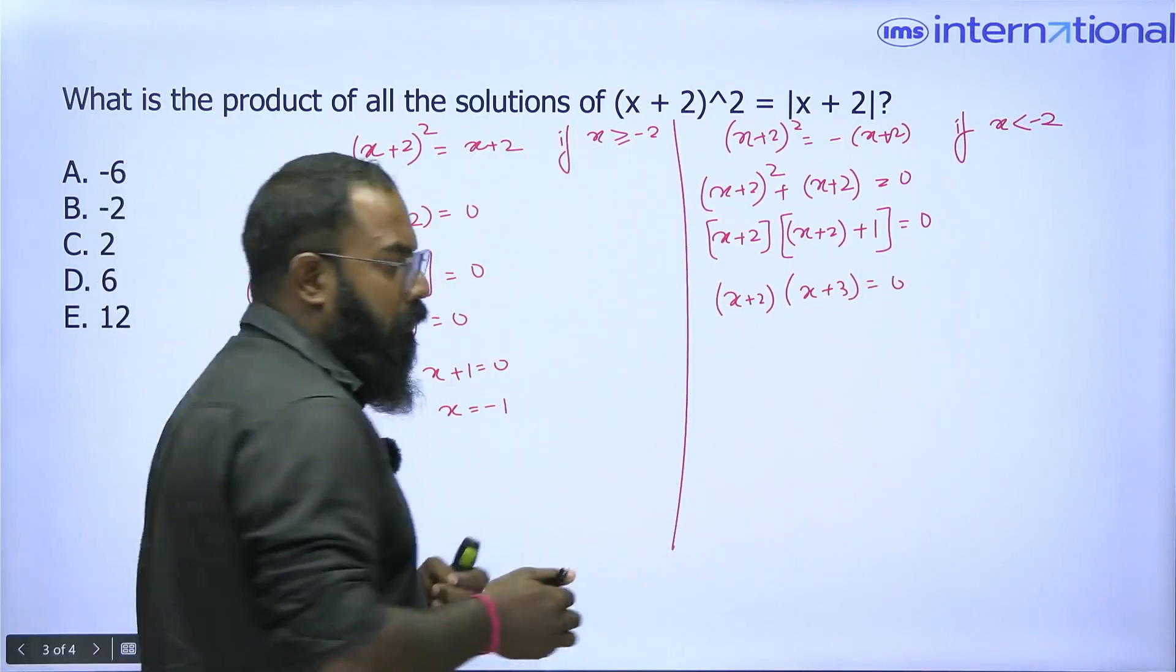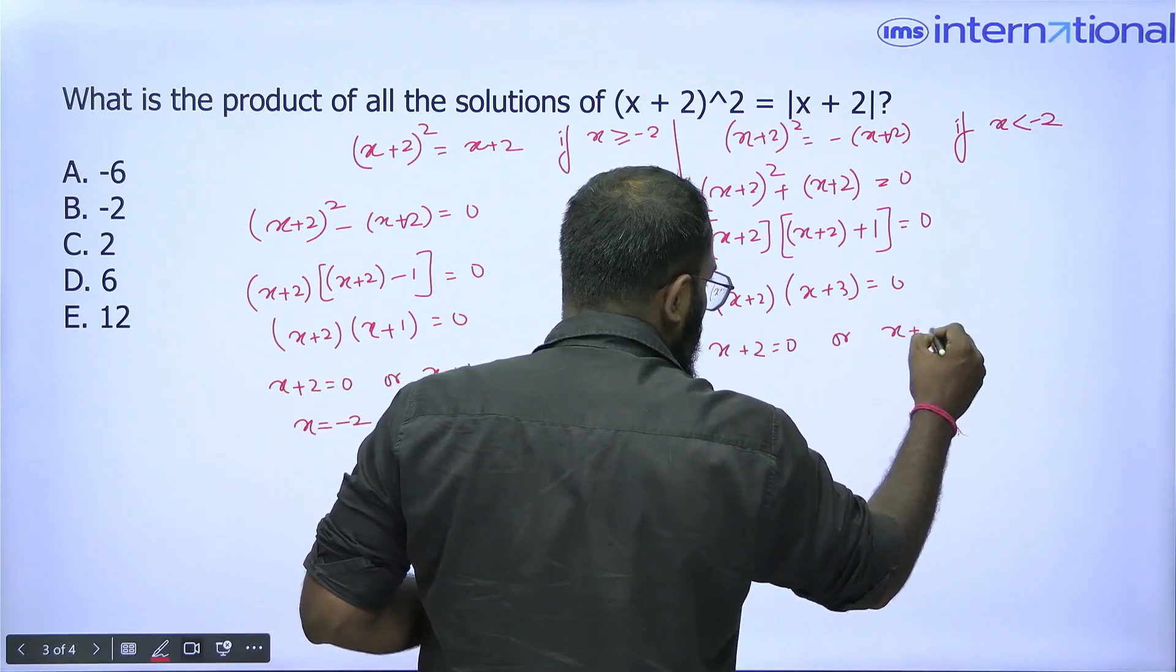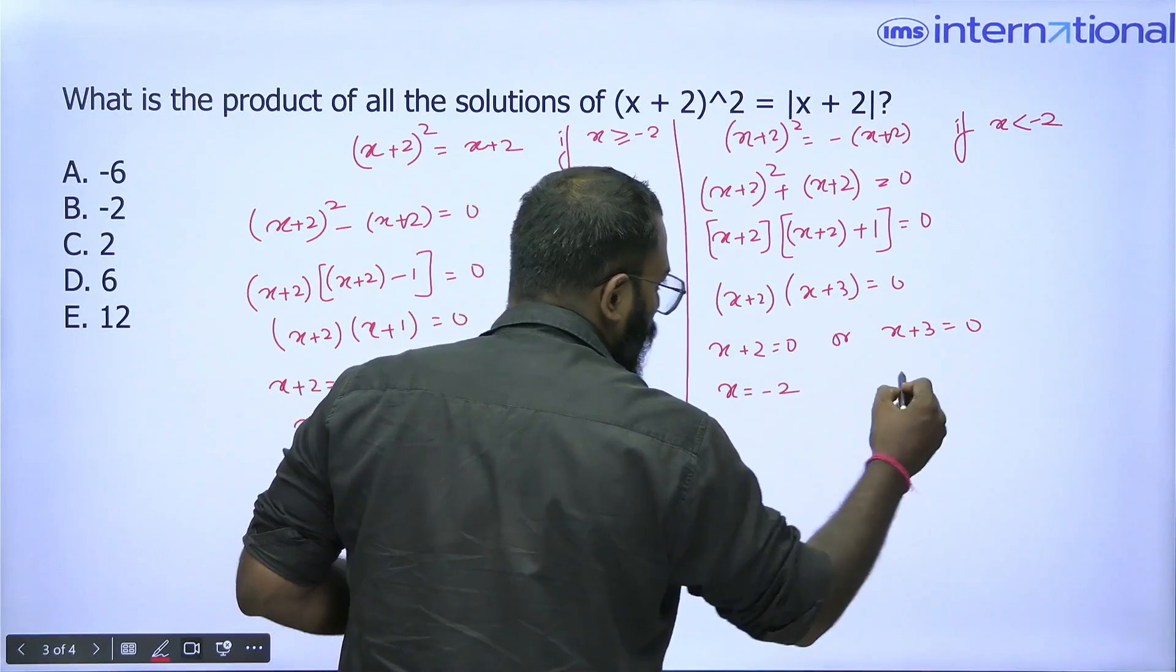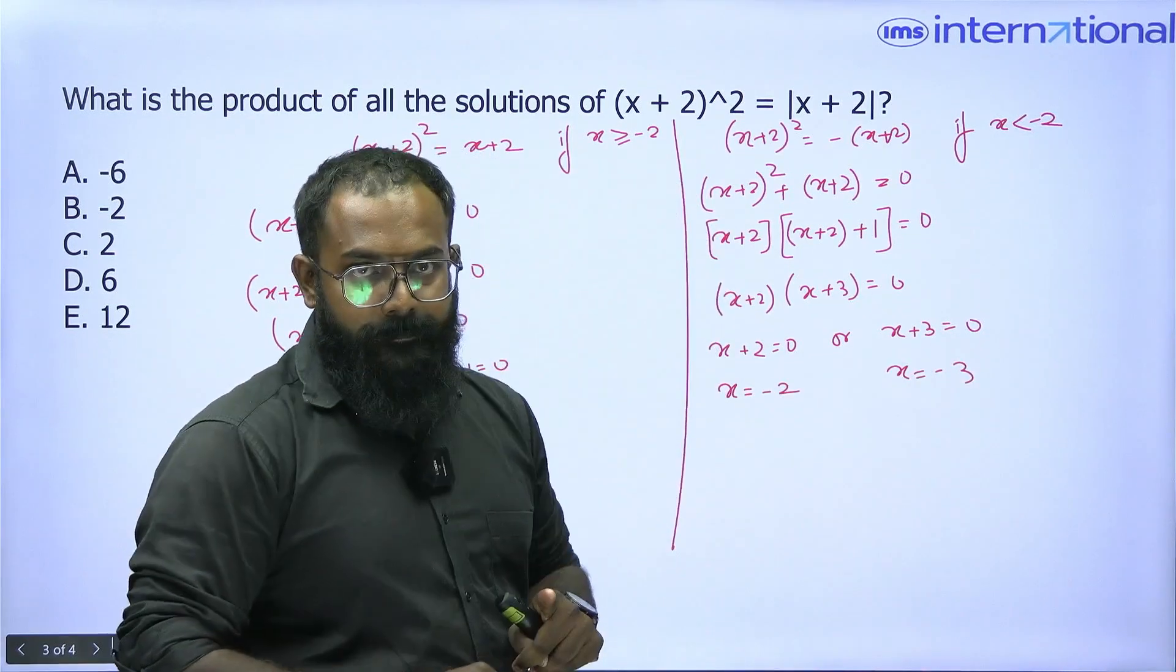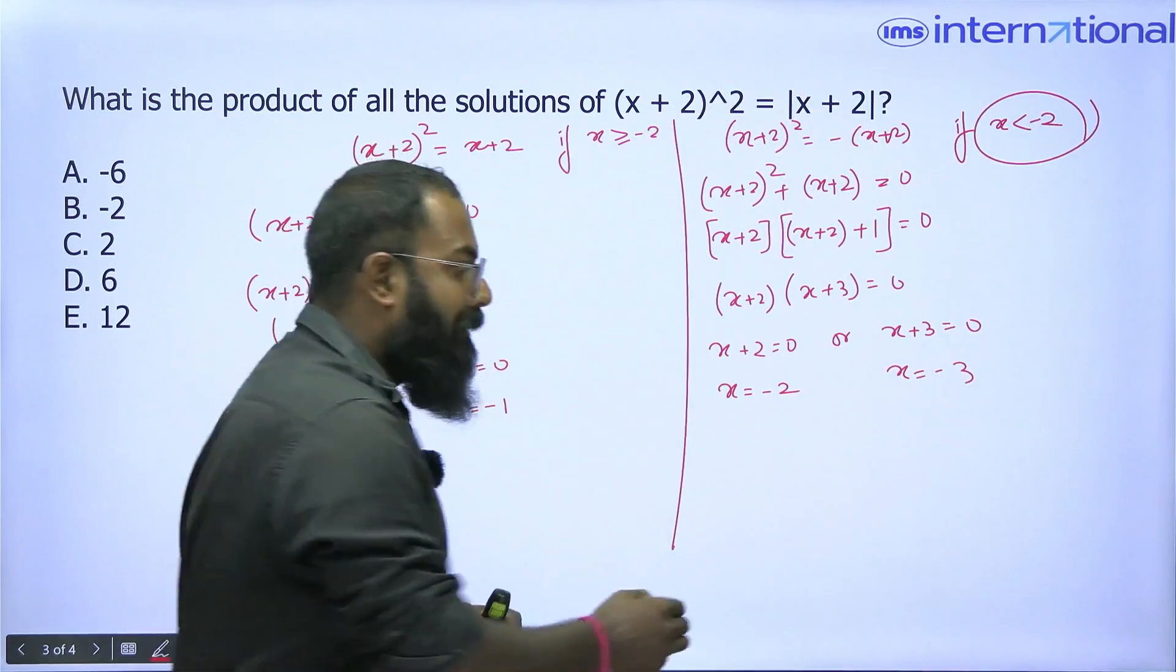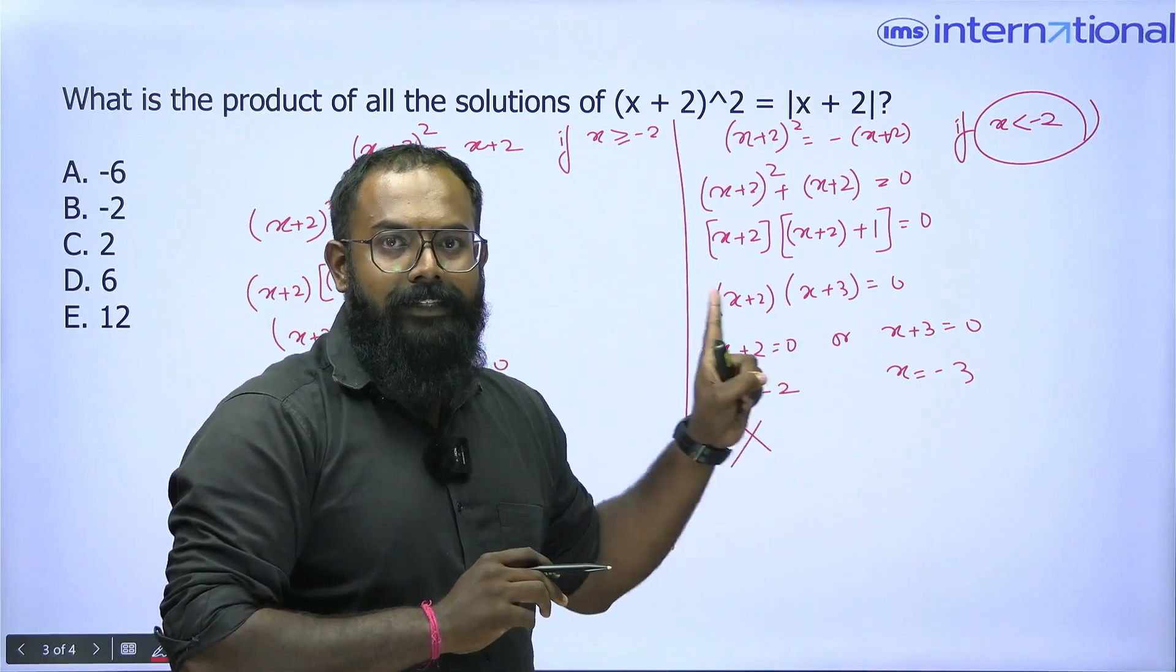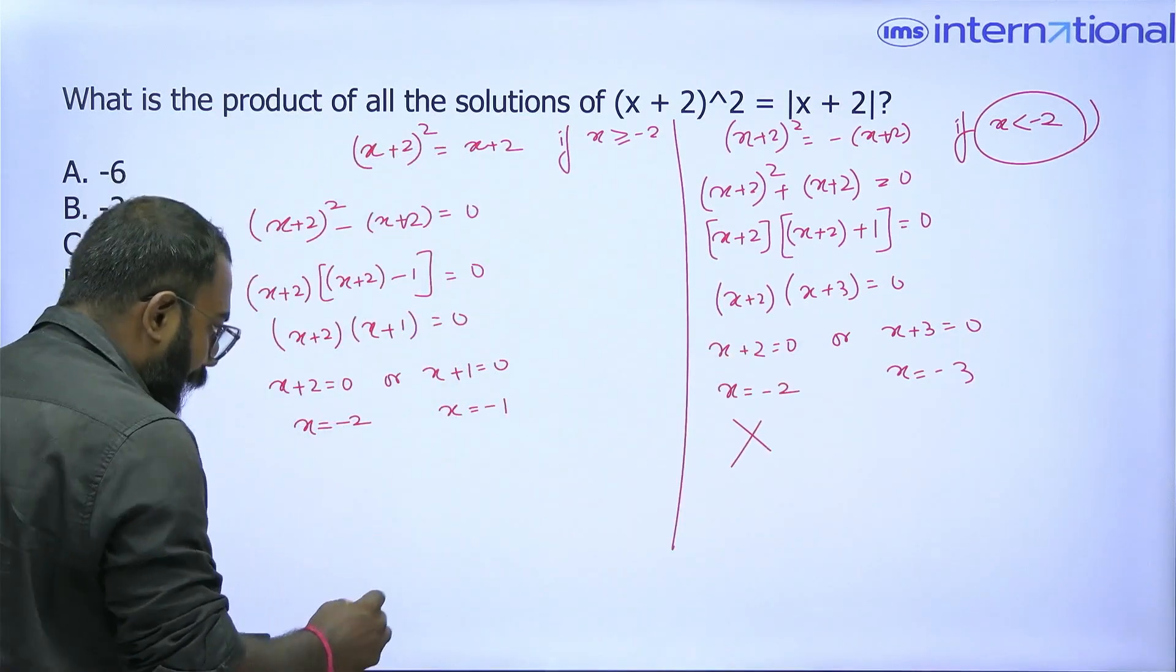Either x + 2 is 0 or x + 3 is 0. When x + 2 is 0, x equals -2. When x + 3 is 0, x equals -3. But x is strictly less than -2, that means x cannot be -2 in this case. In the second case I just get one value for x, that is -3.